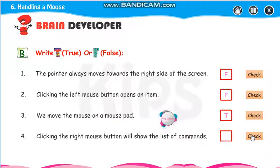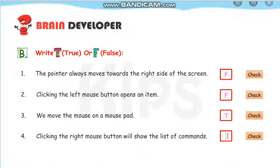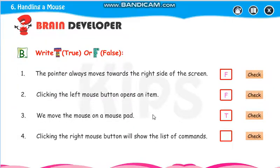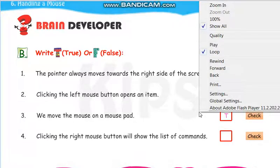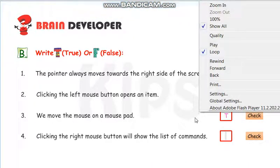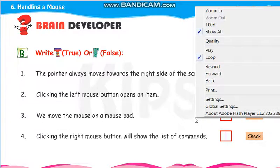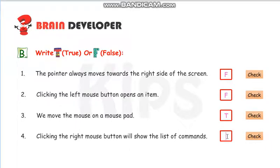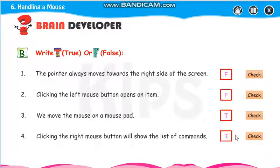Clicking the right mouse button will show the list of commands — true. Notice: when you press the right mouse button, the commands appear. So clicking the right mouse button will show list of commands — true.